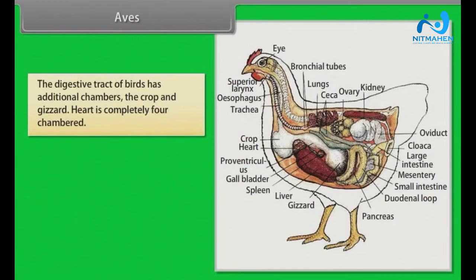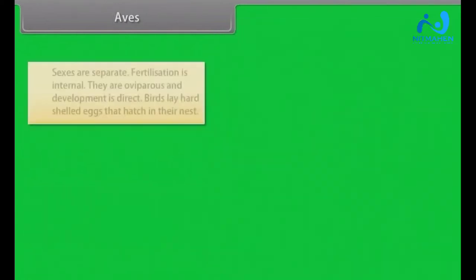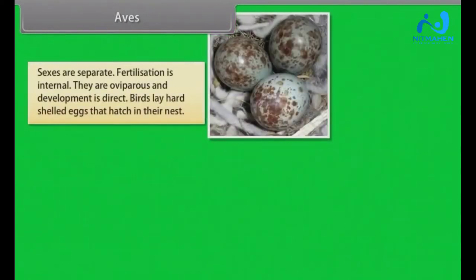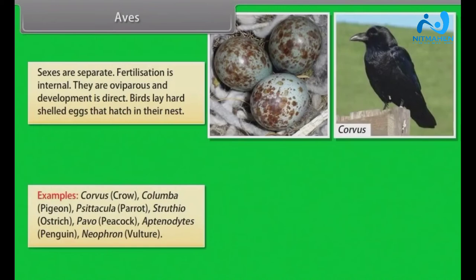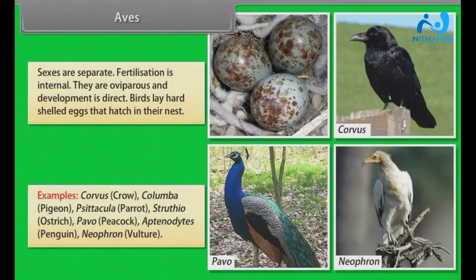Heart is completely four-chambered. Respiration is by lungs. Air sacs connected to the lungs supplement respiration. Sexes are separate. Fertilization is internal. They are oviparous and development is direct. Birds lay hard-shelled eggs that hatch in their nest. Examples: Corvus (Crow), Columba (Pigeon), Psittacula (Parrot), Struthio (Ostrich), Pavo (Peacock), Aptenodytes (Penguin), Neophron (Vulture).